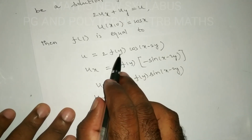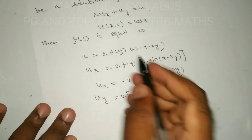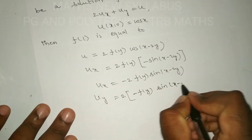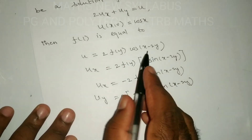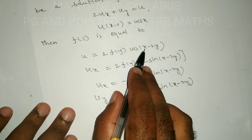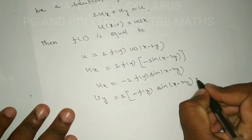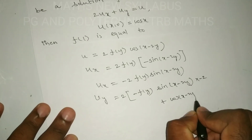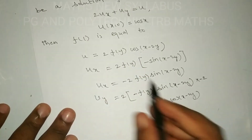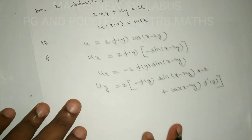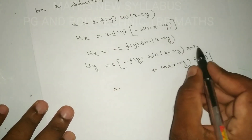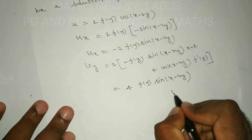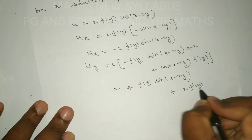Now computing u_y using the product rule: differentiate f(y) into cos(x − 2y) with respect to y. We get 2 times f'(y) into cos(x − 2y), and the derivative of cos(x − 2y) with respect to y gives minus sin(x − 2y) times minus 2, which is plus 2. So minus into minus gives plus, 2 times 2 gives 4. Therefore u_y equals 4 times f(y) into sin(x − 2y) plus 2 times f'(y) into cos(x − 2y).